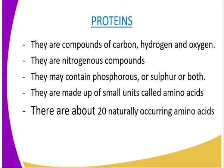In addition to nitrogen, proteins may contain phosphorus, sulfur, or both. Some proteins such as hemoglobin contain other elements such as iron. Proteins are made up of small units called amino acids, and there are about 20 different types of amino acids occurring naturally.